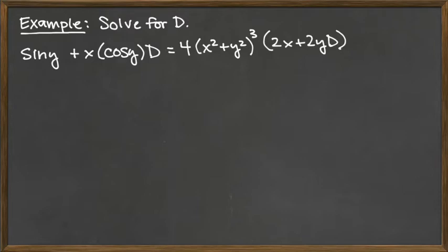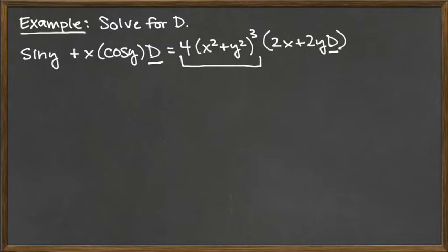So what I want to look at first is just where does d even appear? On the left-hand side of the equation, we see d appearing in the second term. And then on the right-hand side of the equation, we see it here buried inside a parentheses with stuff outside of the parentheses multiplying it.